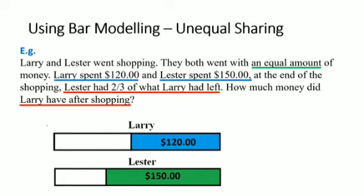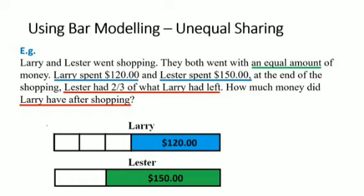The remaining amount of money Lester has is two-thirds of what Larry had left. This means we can divide the remaining amount of money Lester has into three equal parts, like this, so that this is the two-thirds that is referred to. This represents the excess money Lester spent over Larry's spending, obtained by subtracting $120 from $150, giving us $30. So this section represents $30, which is actually one-third of what Larry had remaining.